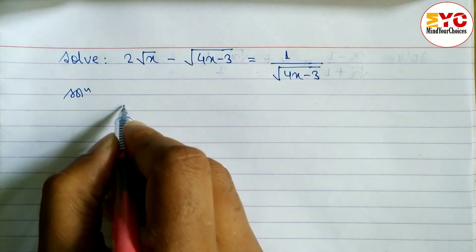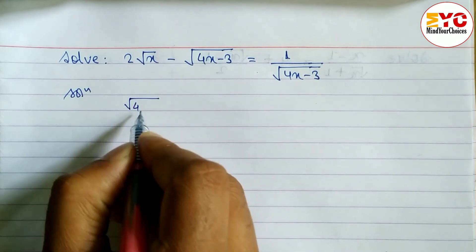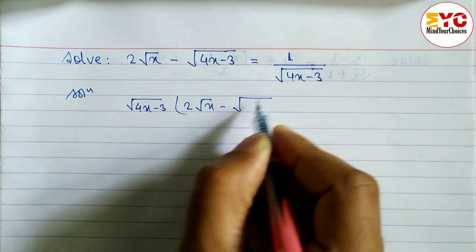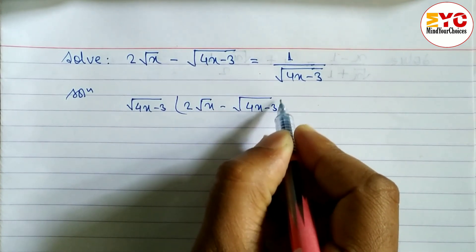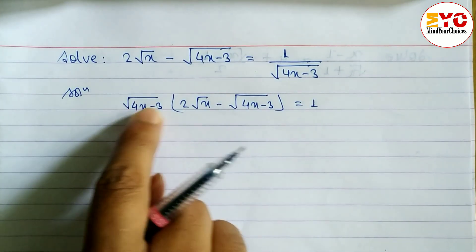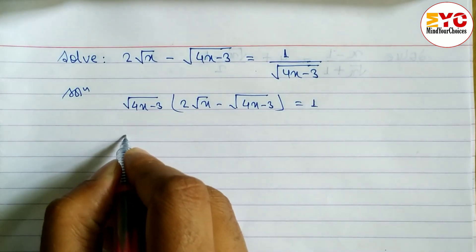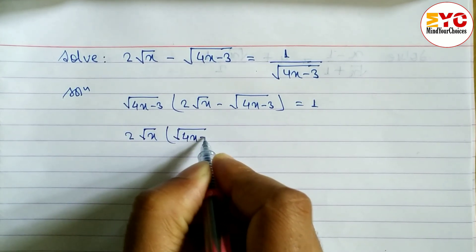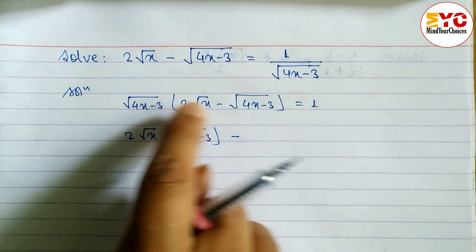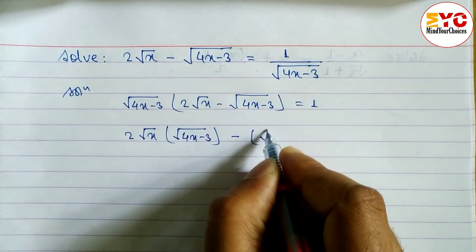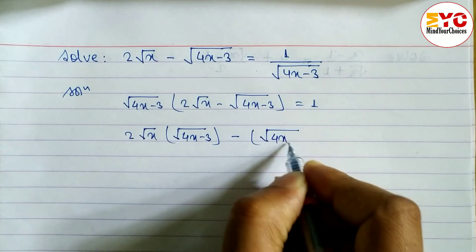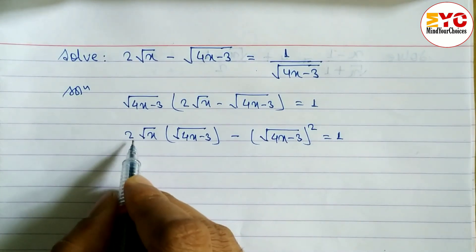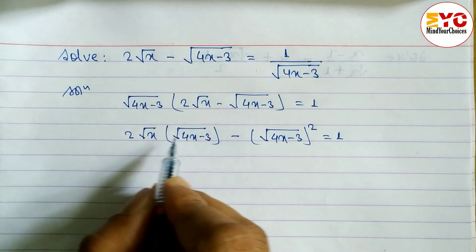We have to cross multiply. So we can write: root under (4x minus 3), multiplied by 2, root under x minus root under (4x minus 3), is equal to 1. After this, let's multiply. These two are the same, so we can write them in the form of a whole square: (4x minus 3) whole square is equal to 1.